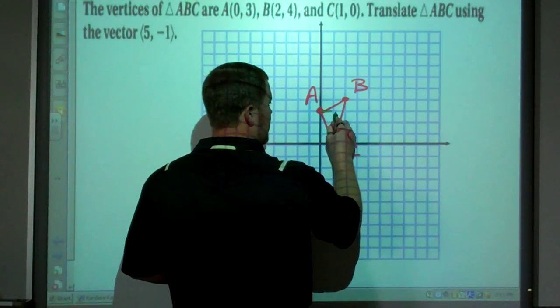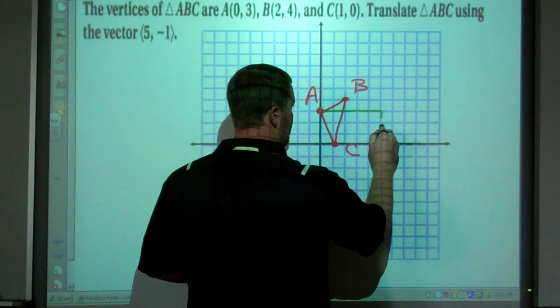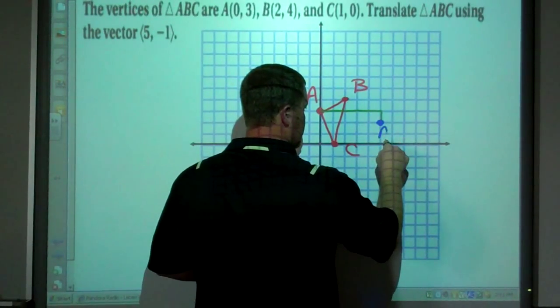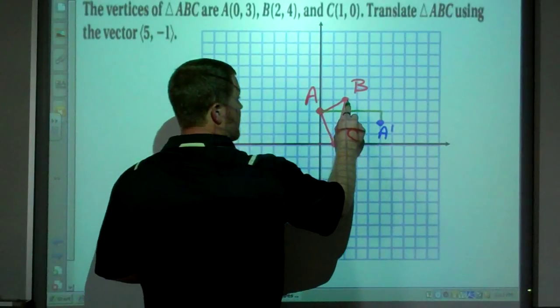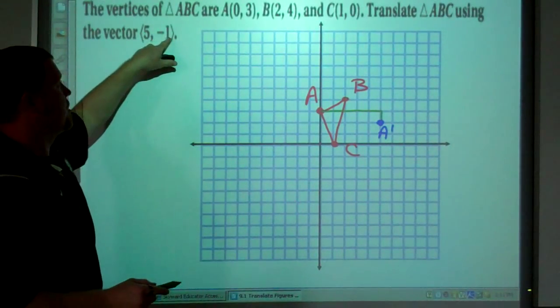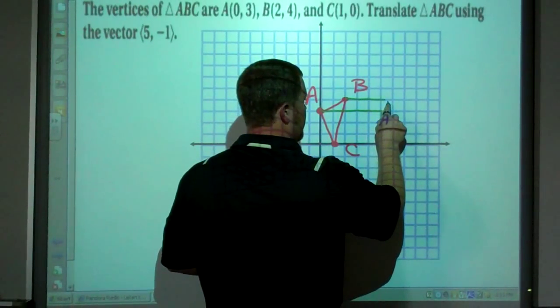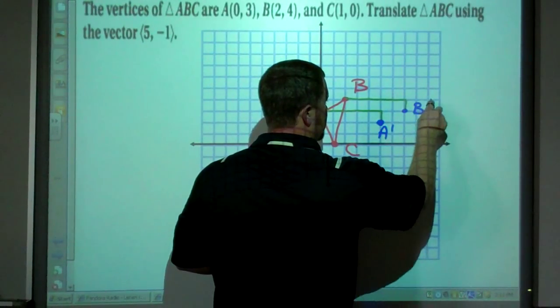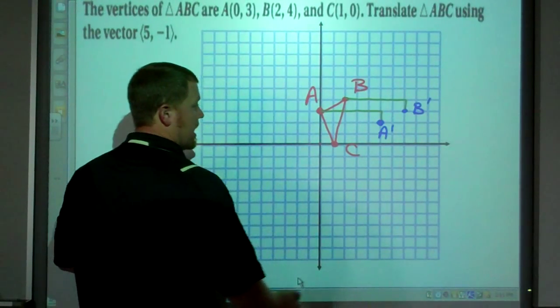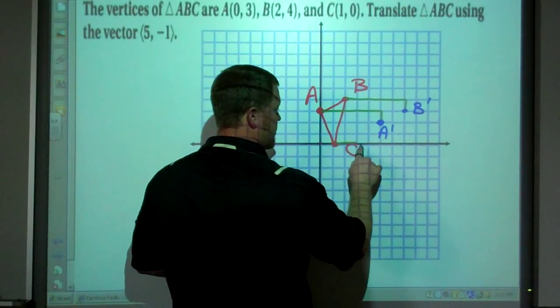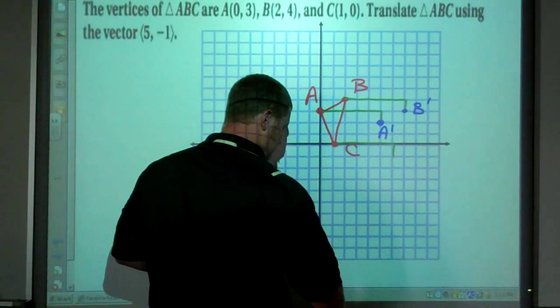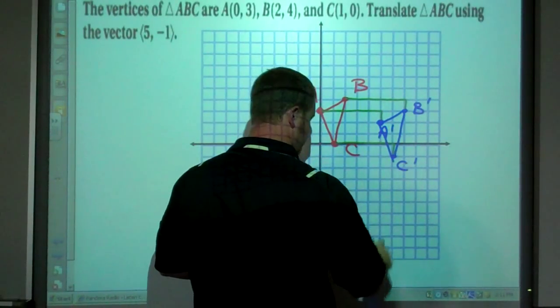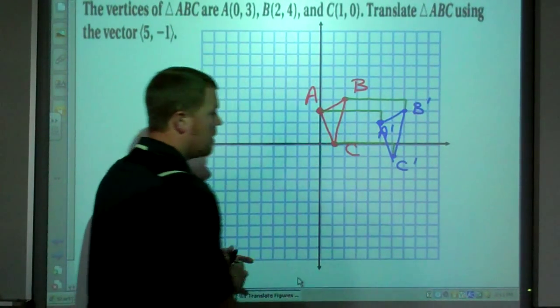For point A: one, two, three, four, five and down one point. There's our new point. So that's A prime. B: five, negative one. Five to the right, down negative one. So one, two, three, four, five, down negative one. There's point B, or B prime, excuse me. And then lastly point C. Five to the right: one, two, three, four, five and down one. And there's point C prime.